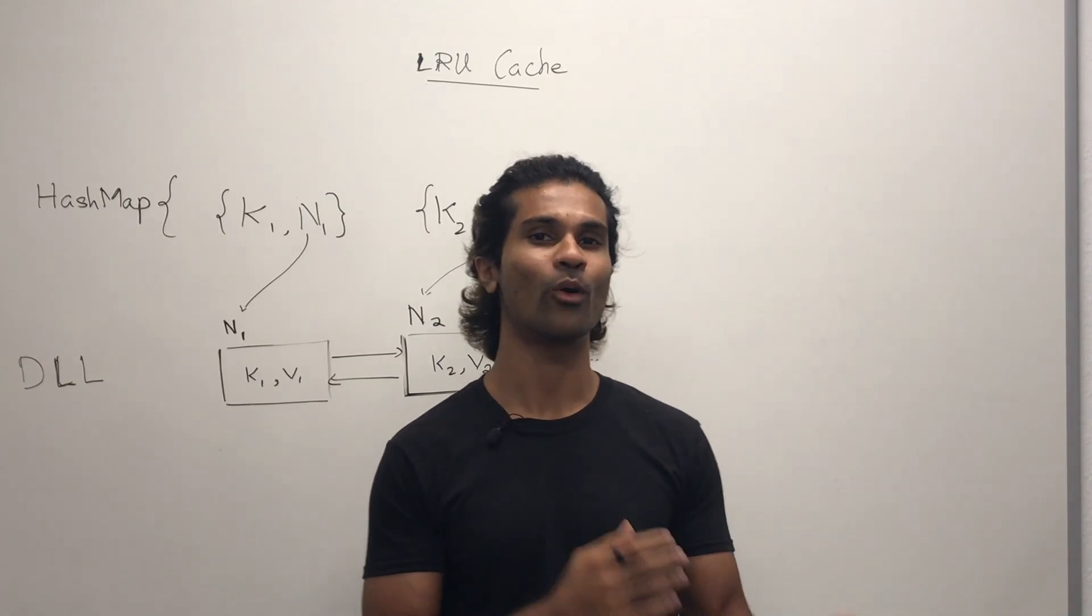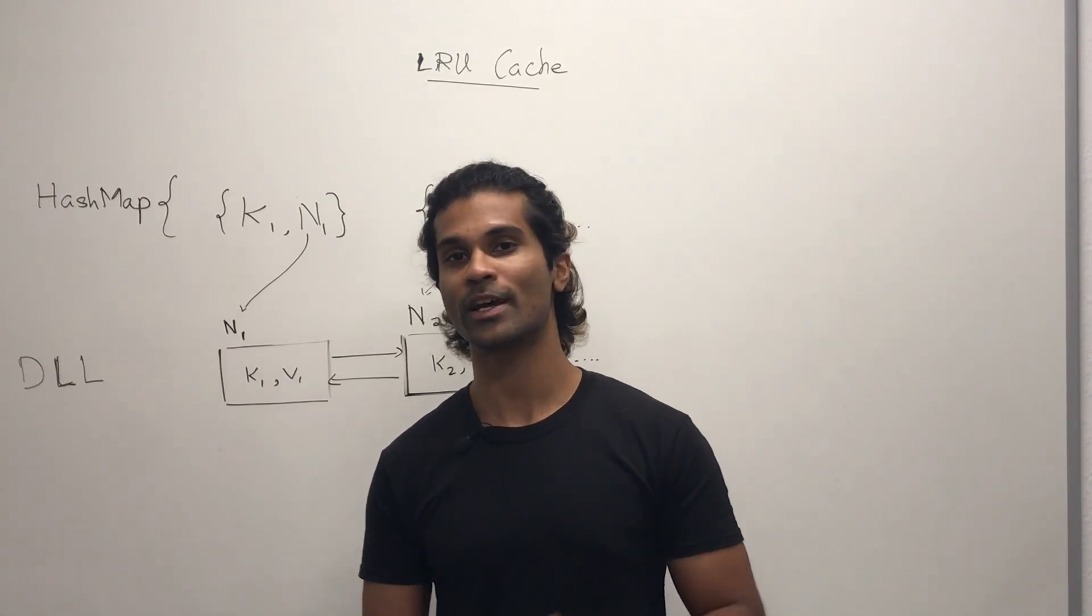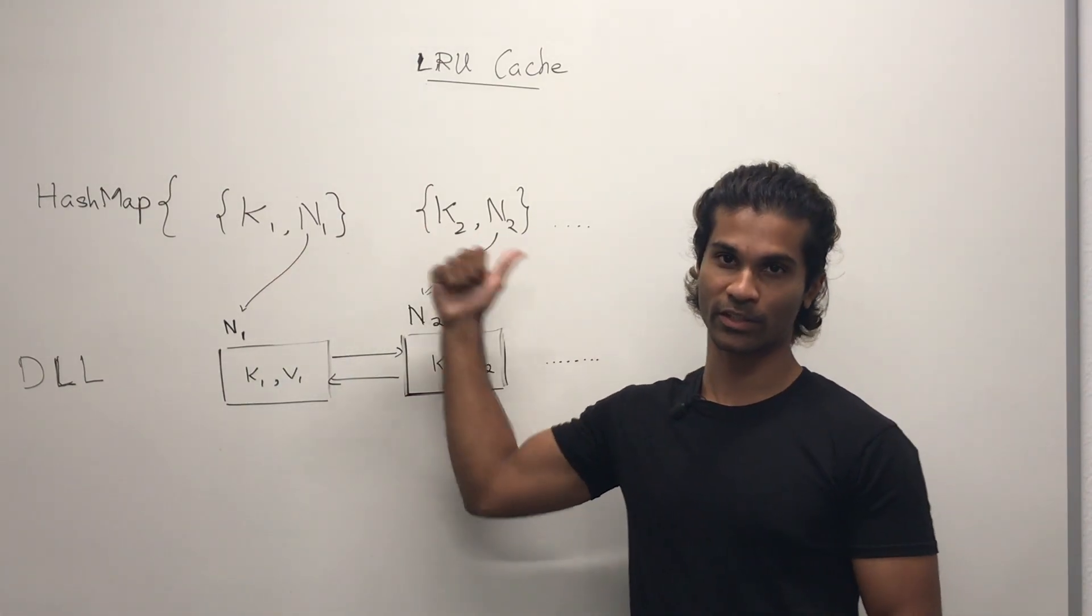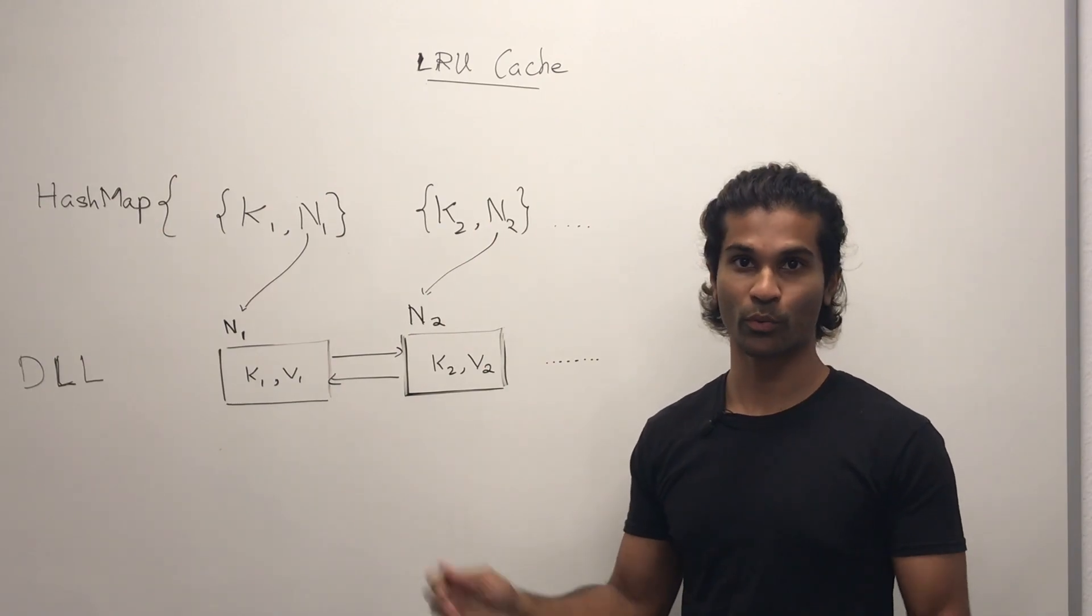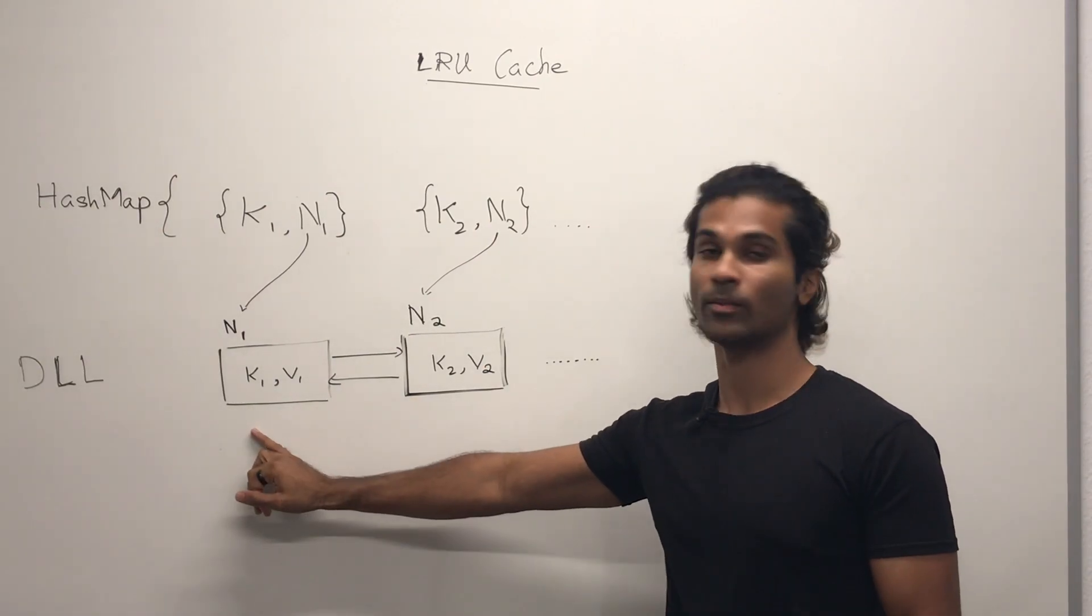Now, how are we going to keep track of which one's the oldest and the newest? Pretend that all we're doing is adding things into our cache. So if we have K1, K2, K3, so on and so forth, we're going to have corresponding nodes in the doubly linked list.